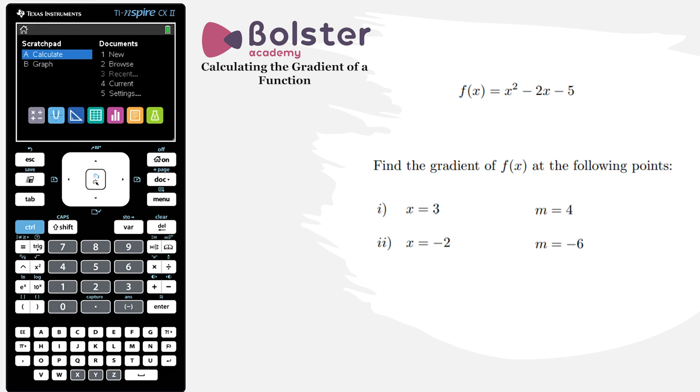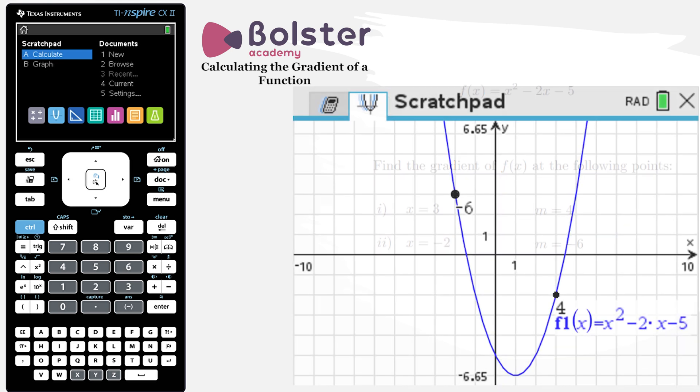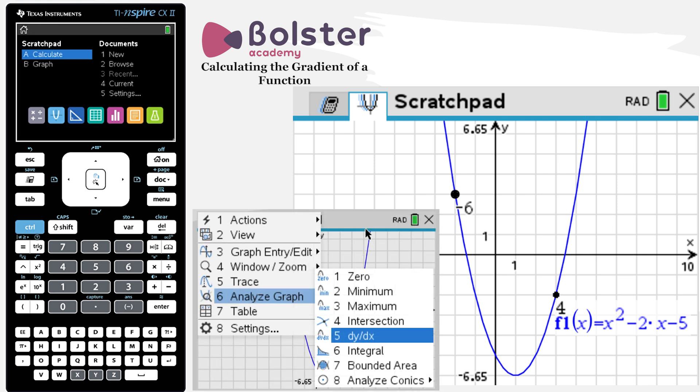So in the last video we found the gradient of a function at various points using our graphical display. So you might have been asking yourself, why were we choosing dy dx on the calculator when we were looking to calculate the gradient of a function at a point? Well, it turns out that the gradient is the derivative.